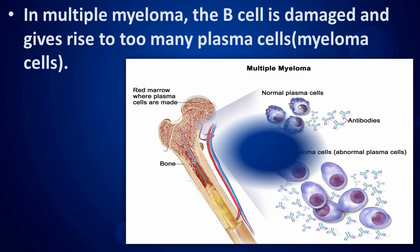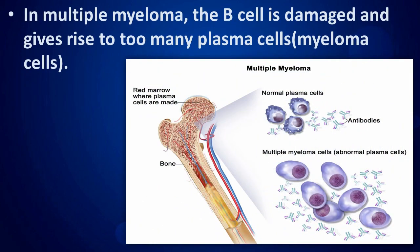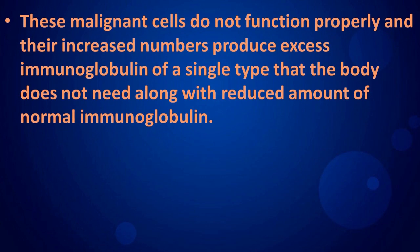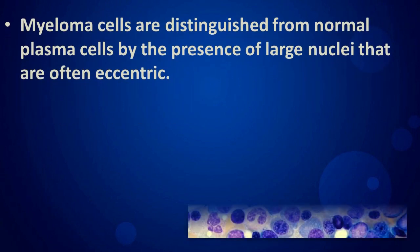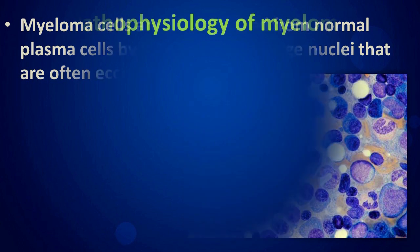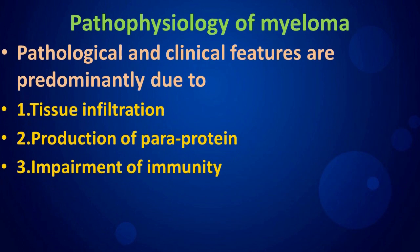In multiple myeloma, the B cell is damaged and gives rise to too many plasma cells. These malignant cells do not function properly, and their increased numbers produce excess immunoglobulin of a single type that the body does not need, along with a reduced amount of normal immunoglobulin. Myeloma cells are distinguished from normal plasma cells by the presence of large nuclei that are often eccentric.